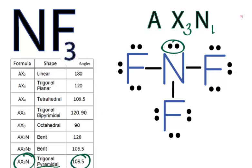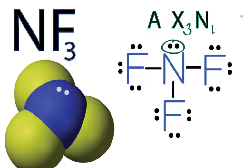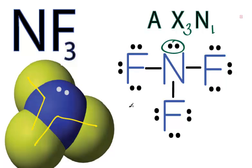We can go back to our three-dimensional structure and look at the bond angles. The bond angles here are about 109.5 degrees, though they won't be exactly 109.5. So the molecular geometry for NF3 is trigonal pyramidal. This is Dr. B — thanks for watching.